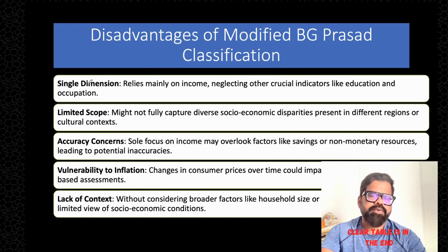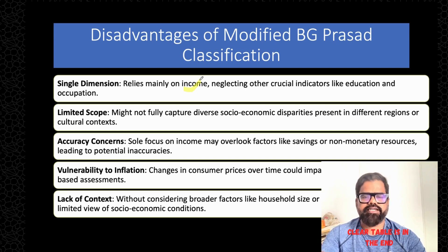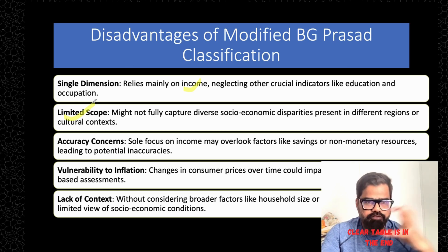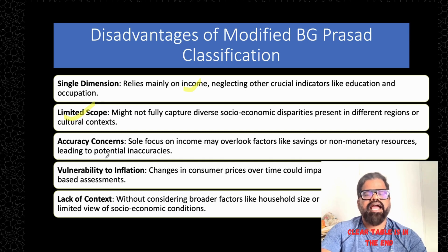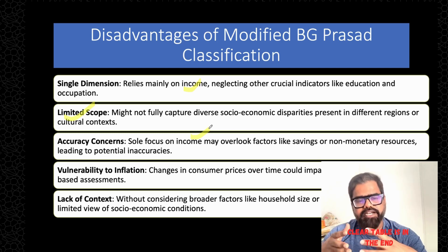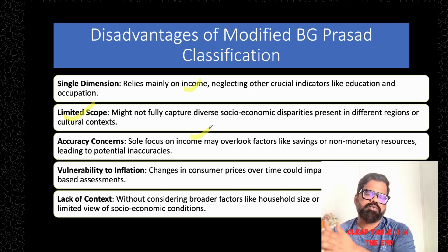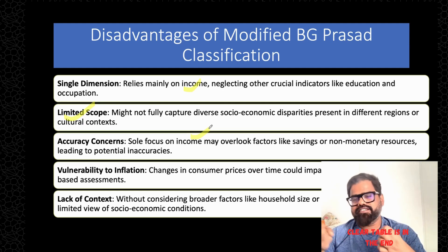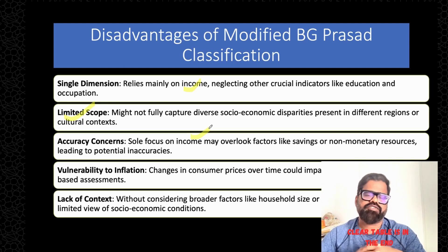There are also disadvantages. It is mainly dependent on only one dimension — income — and does not include other indicators like education or occupation, making it less reliable. It has limited scope and does not capture the diverse socioeconomic disparities in the country. It overlooks non-monetary resources like savings, creating a possibility of inaccuracy. It is also vulnerable to inflation since it depends on the Consumer Price Index, which keeps changing.